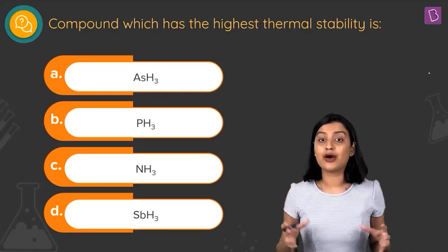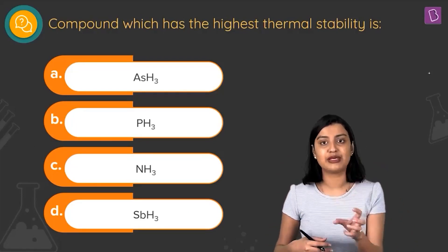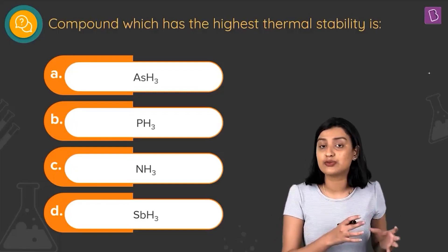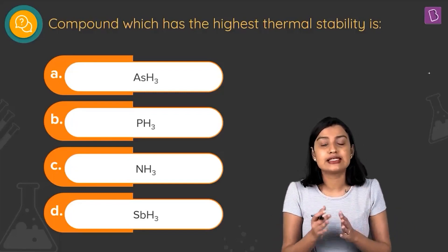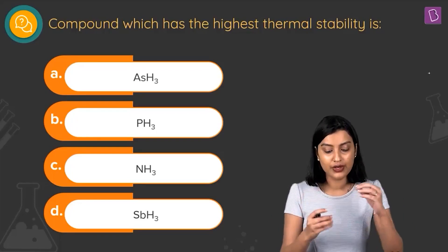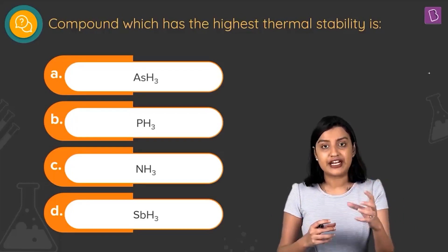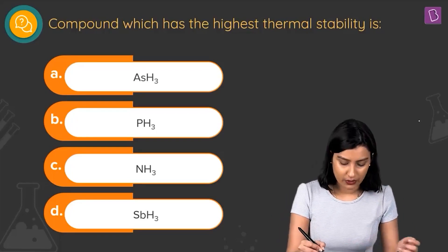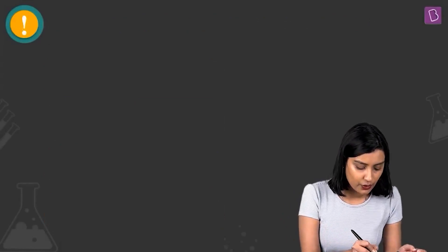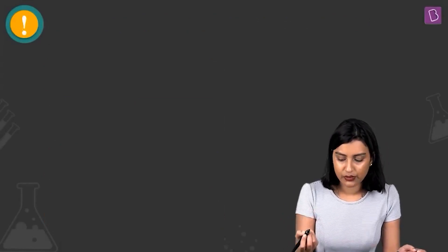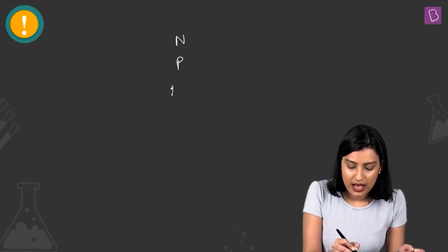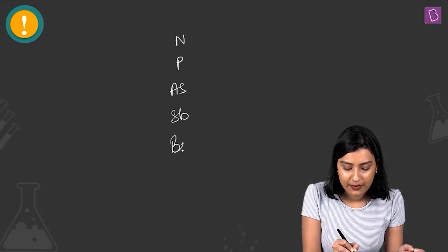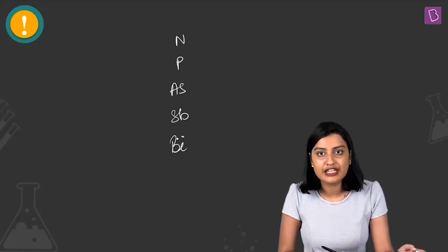These are p-block hydrides, which means they are covalent in nature. What we need to address is how effective the orbital overlap is. In group 15, you have nitrogen, phosphorus, arsenic, antimony, and then bismuth.